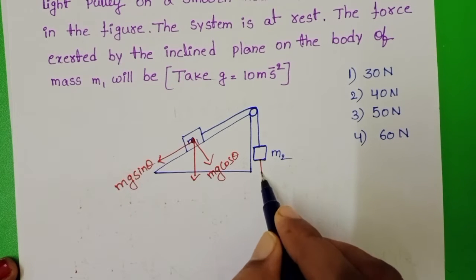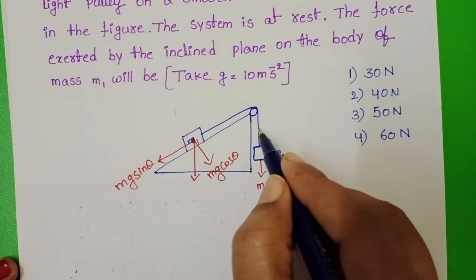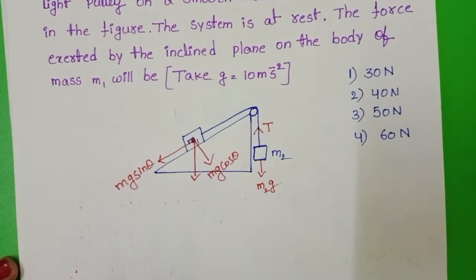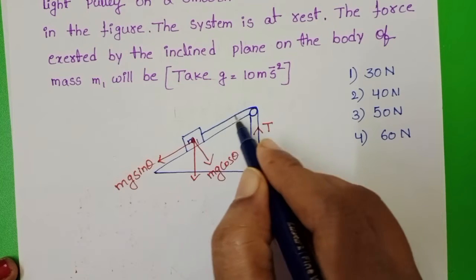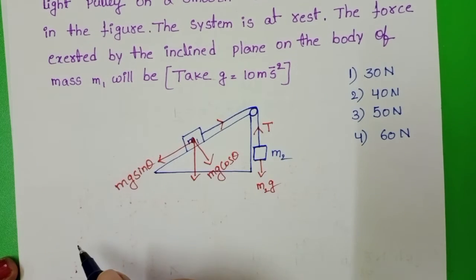Weight of M2 is acting in downward direction. This weight is balanced due to the tensional force. And here also tensional force is acting upward the inclined plane.